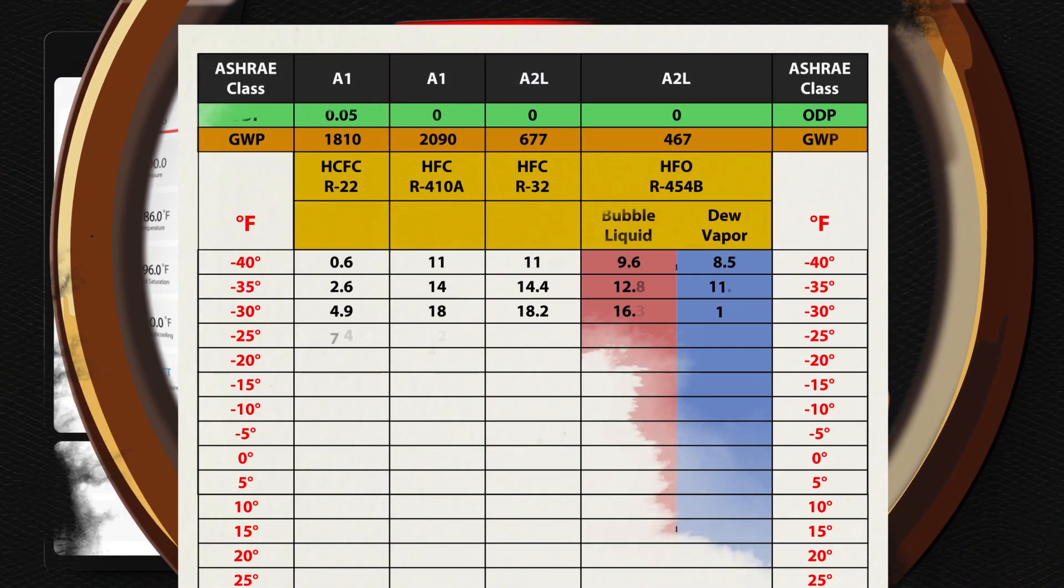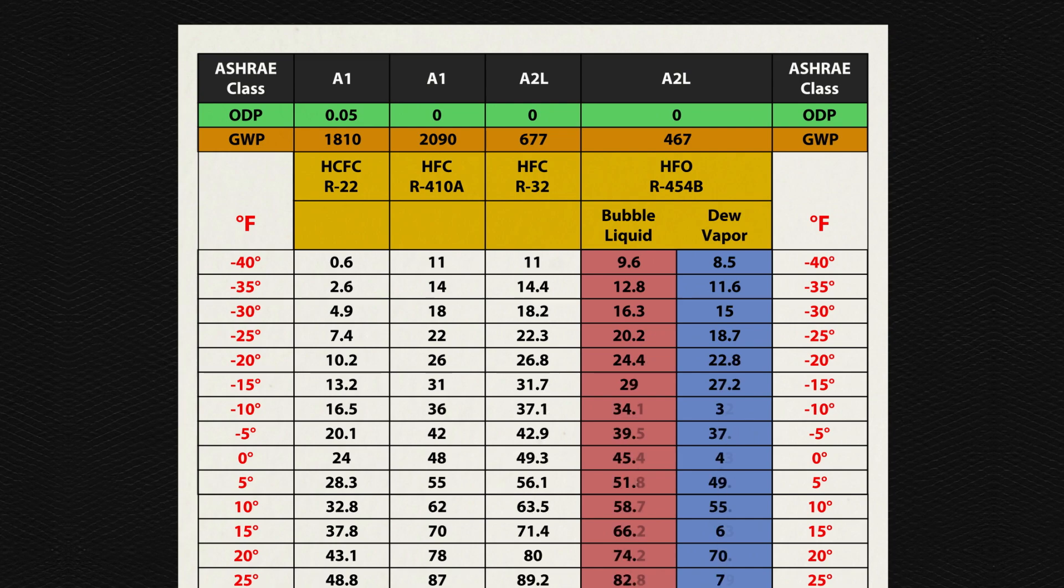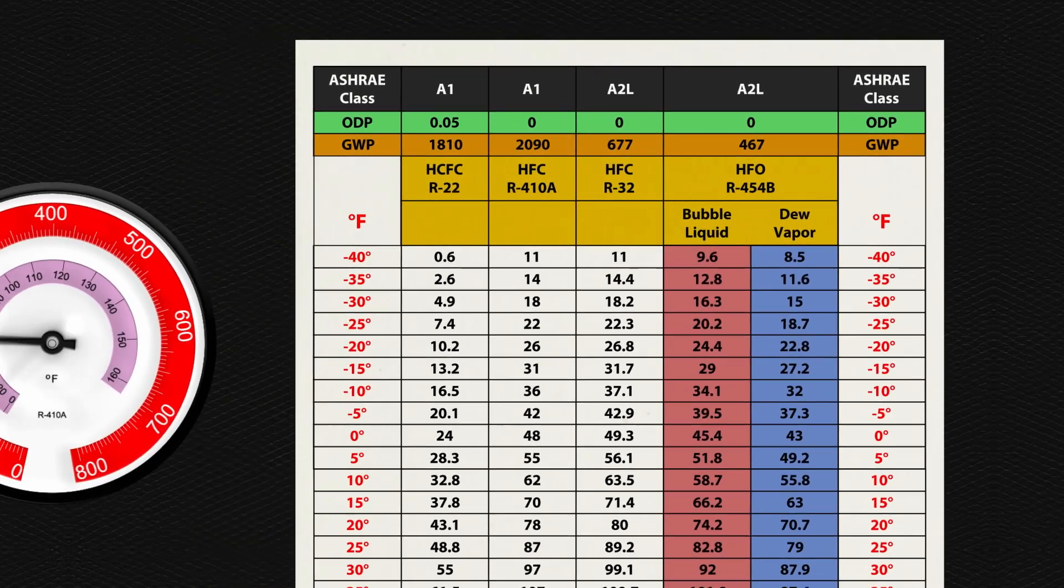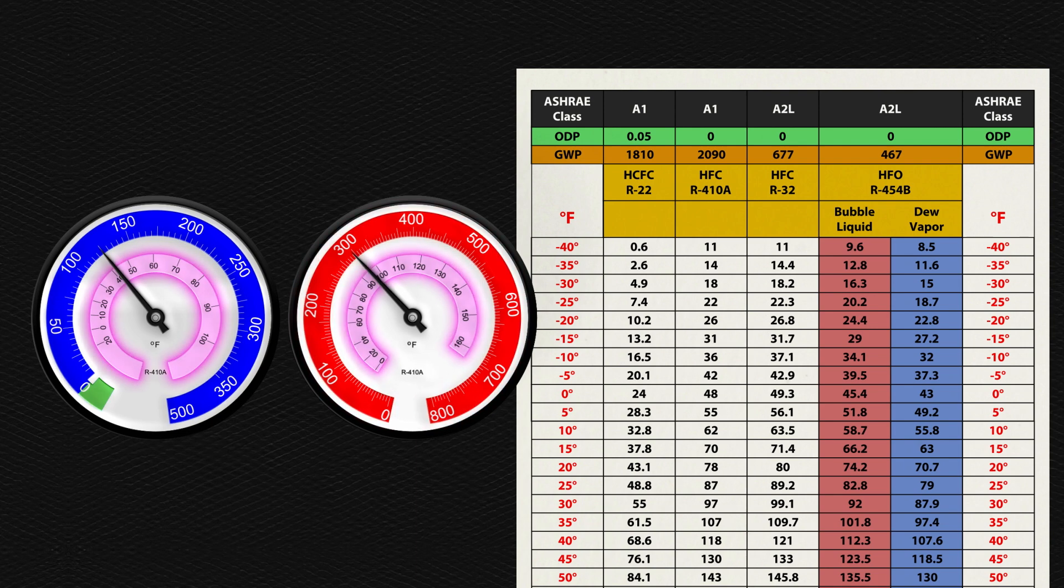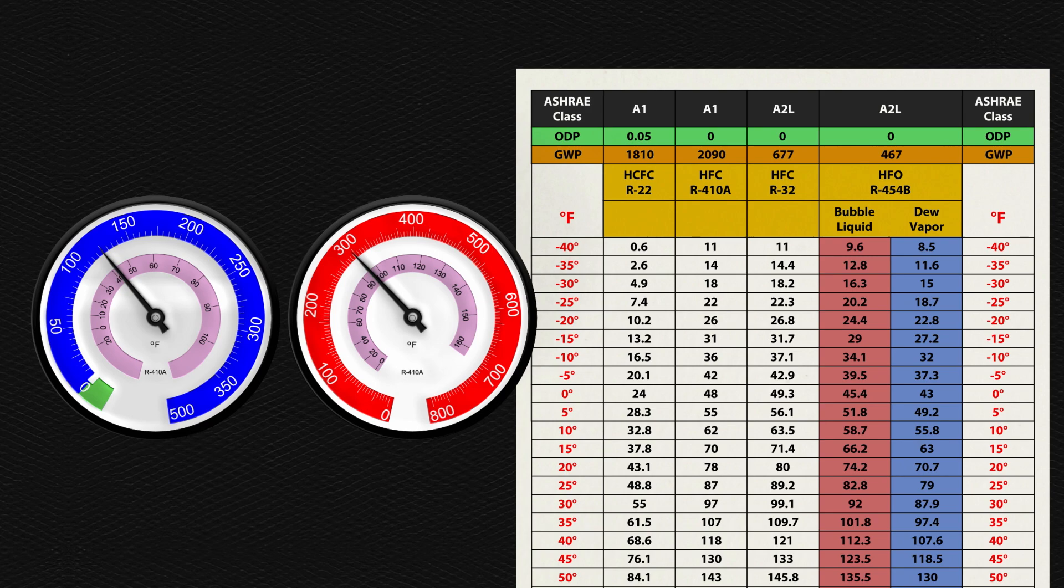The PT chart will be integrated into the technician's instruments. Analog gauges will have the pressure on the outer rim and the saturated temperature on the inner rims. Analog gauges have limitations with refrigerant type and accuracy.